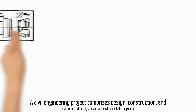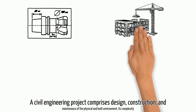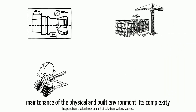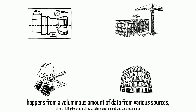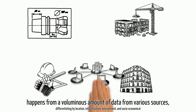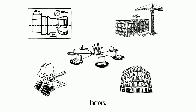The civil engineering project comprises design, construction, and maintenance of the physical and built environment. Its complexity stems from a voluminous amount of data from various sources, differentiating by location, infrastructure, environment, and socio-economical factors.